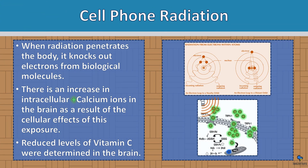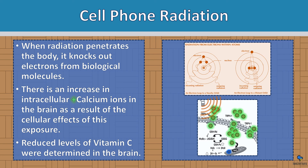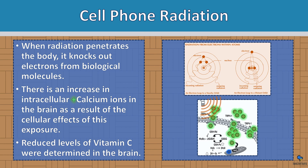Cell phone radiation: when radiation penetrates the body, it knocks electrons out of biological molecules. There is an increase in intracellular positive calcium ions in the brain as a result of this cellular exposure. Reduced levels of vitamin C were also determined in the brain — because vitamin C is an electron donor, when you have more positive calcium ions, you're going to have less vitamin C. Inhaling negative ions could offset this radiation.